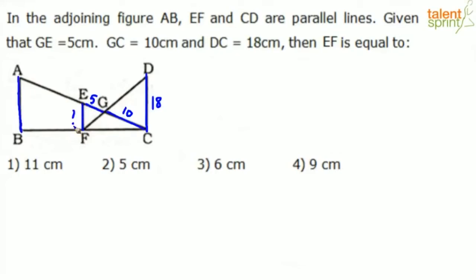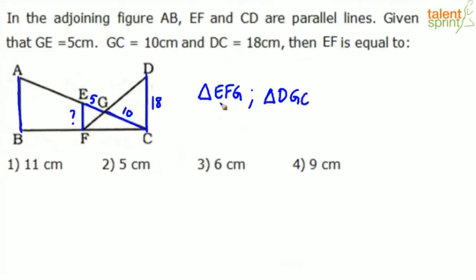To solve this, observe that the two triangles EGF and GDC are similar. By taking the ratio of corresponding sides of similar triangles, we'll be able to find the length EF. We are comparing triangle EFG and triangle DGC.